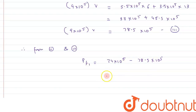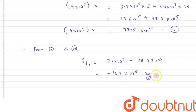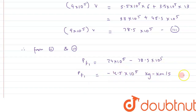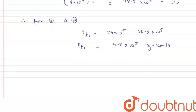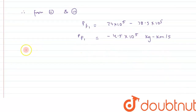Substituting equations 2 and 3: pf1 = 74 × 10⁵ − 78.5 × 10⁵ = −4.5 × 10⁵ kg·km/s. This is the final momentum for the first stage rocket. The negative sign indicates it is moving in the leftward direction, meaning v1f is directed to the left.